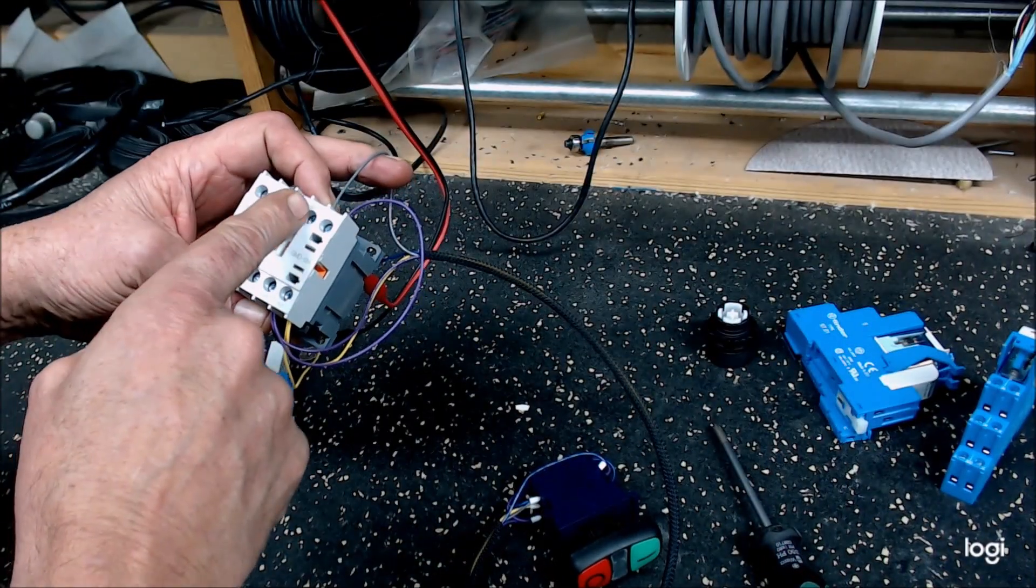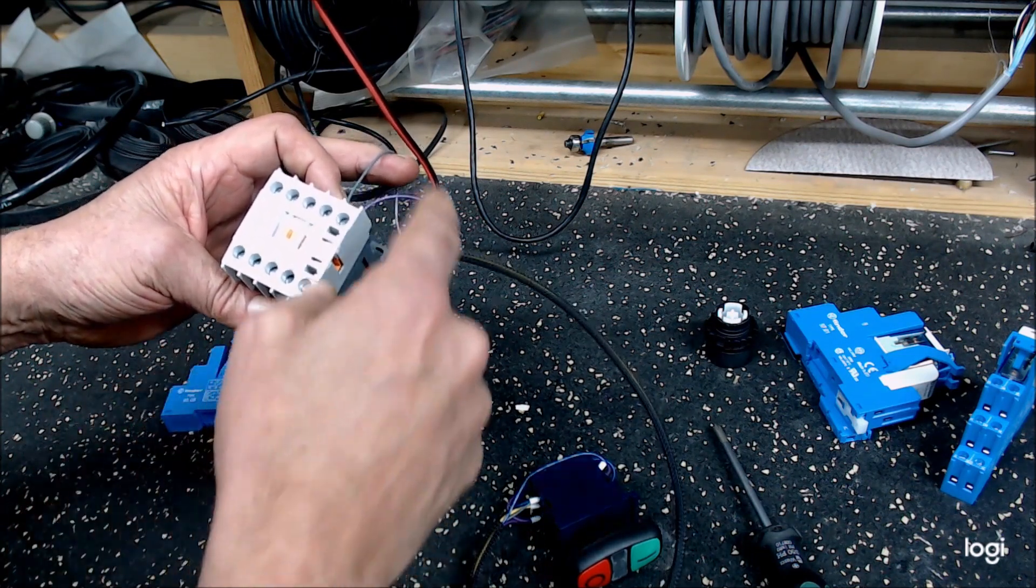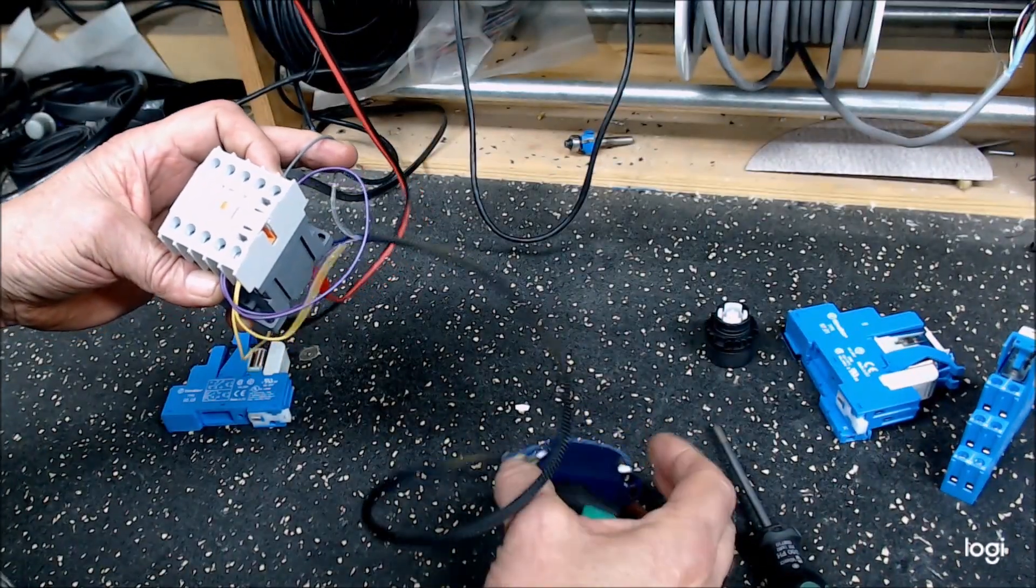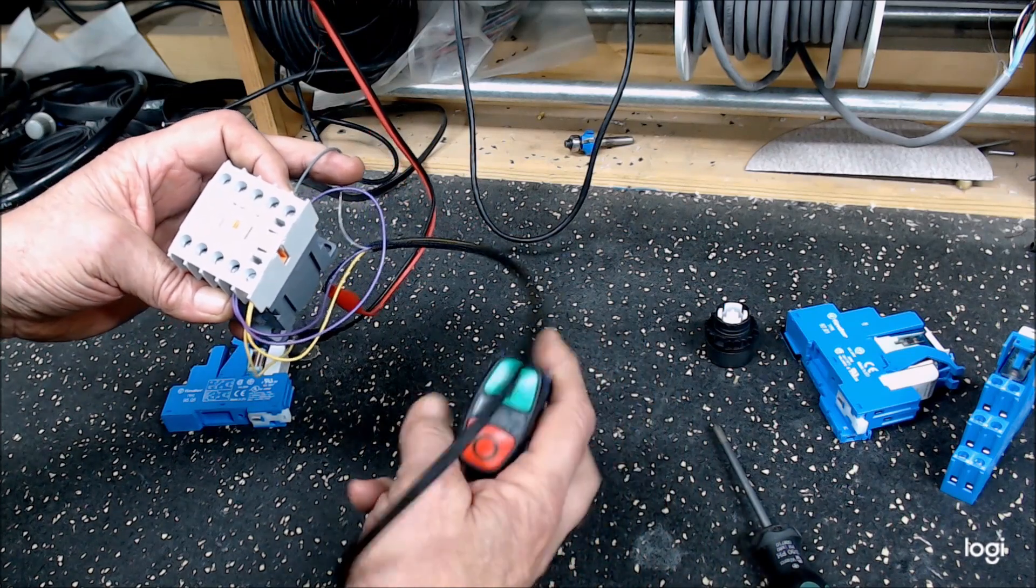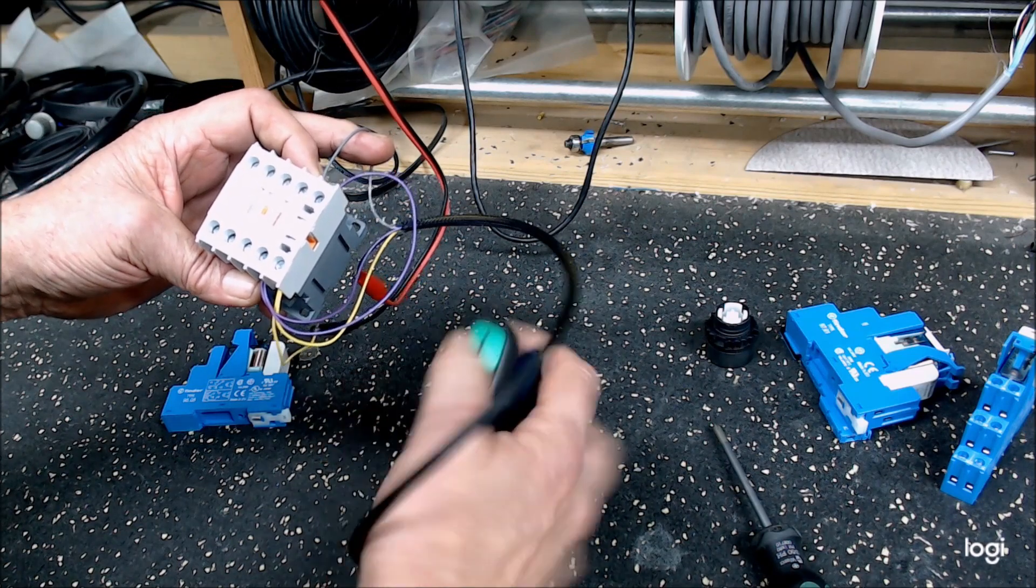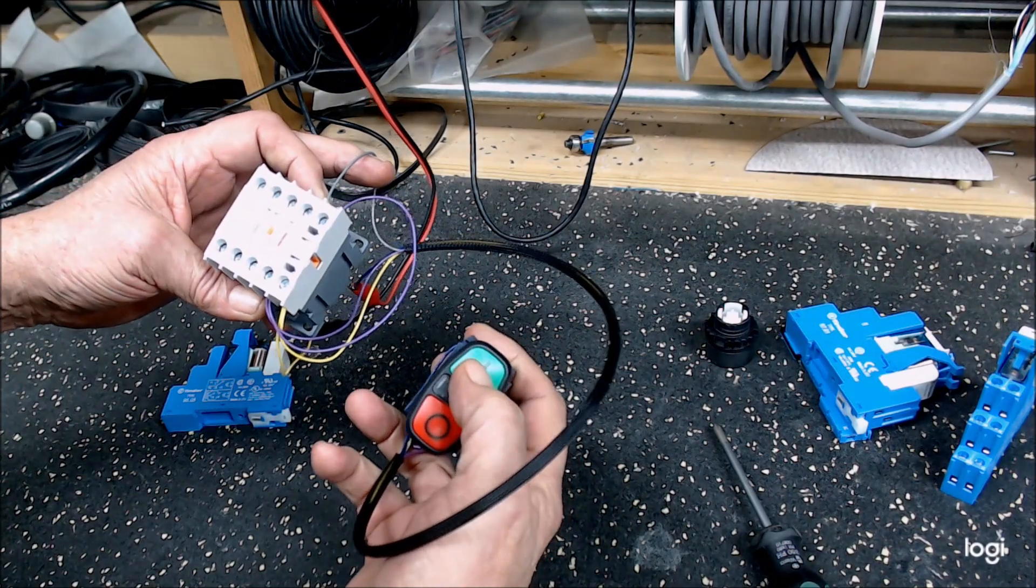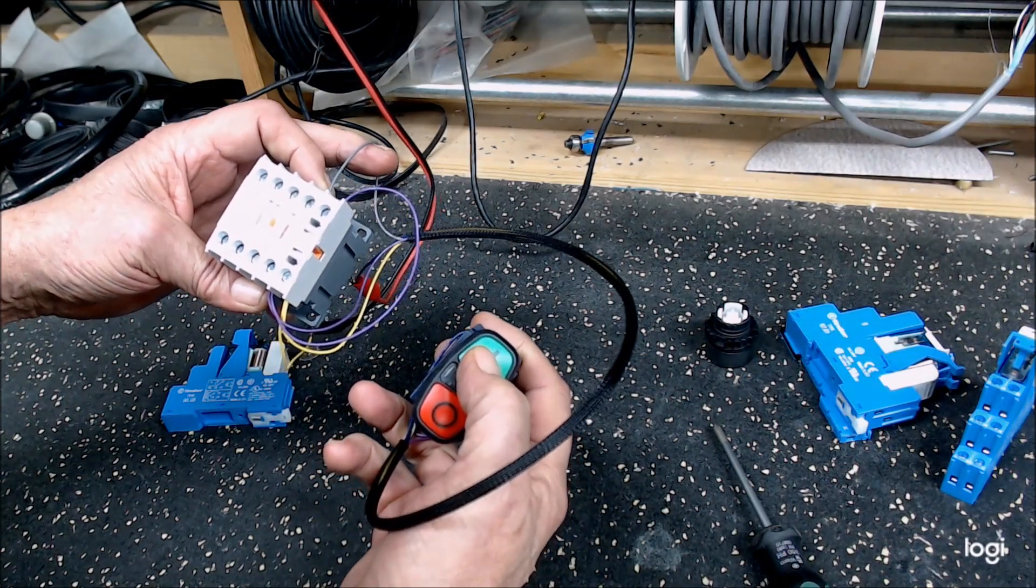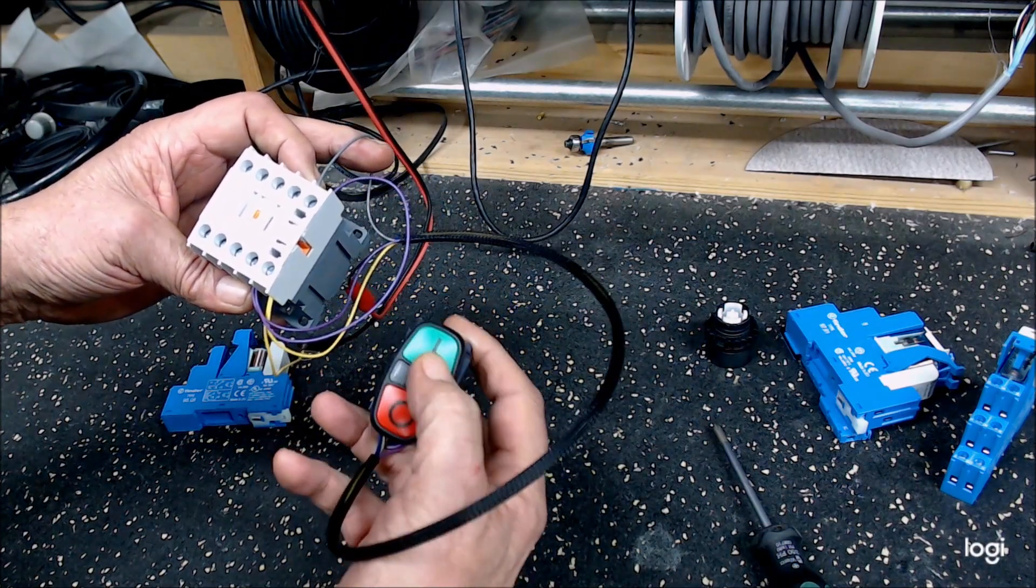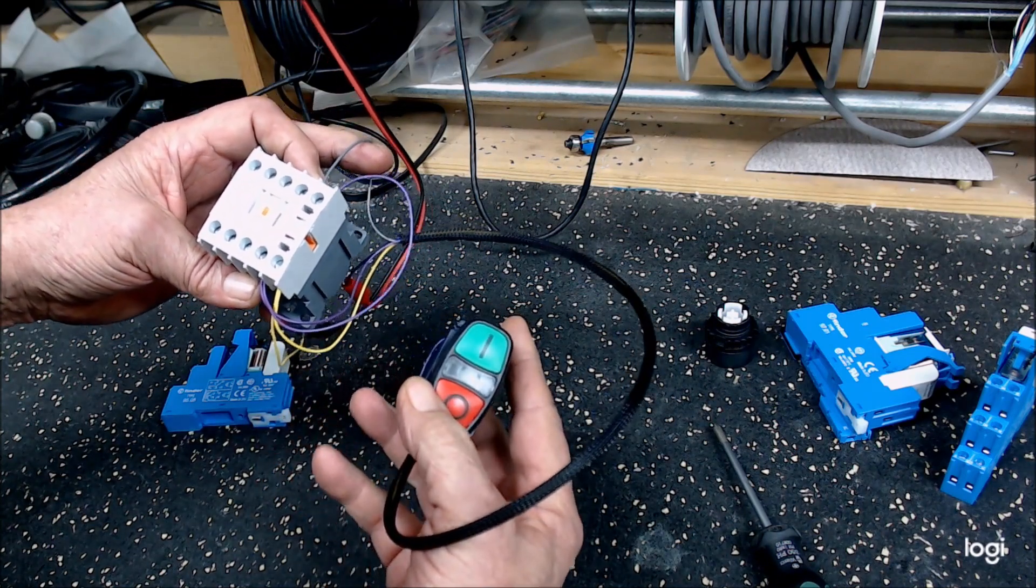The coil contacts are jumped by the normally open switch which is on the green button. So when I jump the contacts with the power supply on, when I go ahead and jump across those contacts, it energizes. When I break the contact, it releases. Back and forth, on and off - just that simple, all the same.